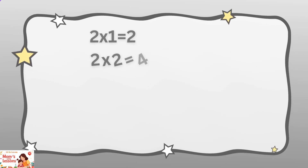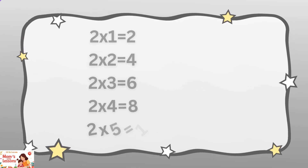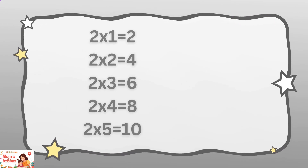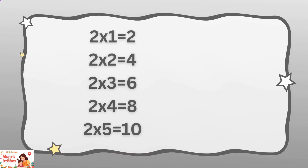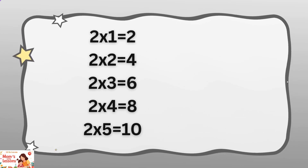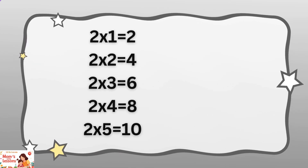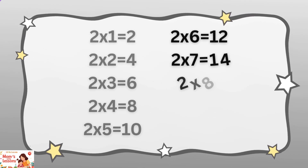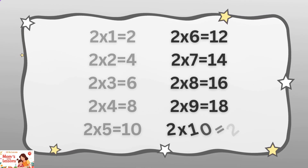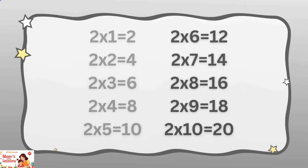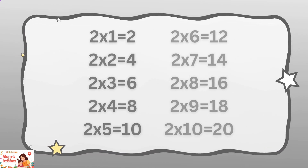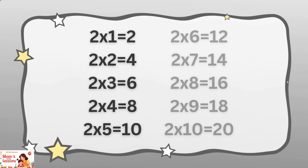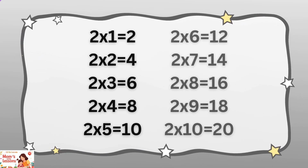Let's repeat, children. Two ones are two, two twos are four, two threes are six, two fours are eight, two fives are ten, two sixes are twelve, two sevens are fourteen, two eights are sixteen, two nines are eighteen, two tens are twenty.